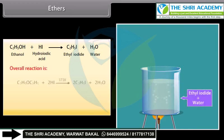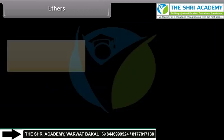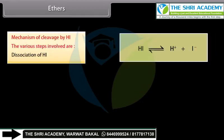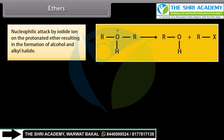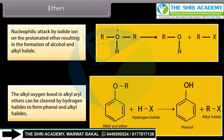Overall reaction: hydroiodic acid reacts with diethyl ether at 373 Kelvin and it forms ethyl iodide and water. The order of reactivity of halogen acids is hydrogen iodide followed by hydrogen bromide and then hydrogen chloride. The mechanism of cleavage by HI involves: dissociation of HI, protonation of ether, and nucleophilic attack by iodide ion on the protonated ether resulting in formation of alcohol and alkyl halide. The alkyl-oxygen bond in alkyl aryl ethers can be cleaved by hydrogen halides to form phenol and alkyl halides.